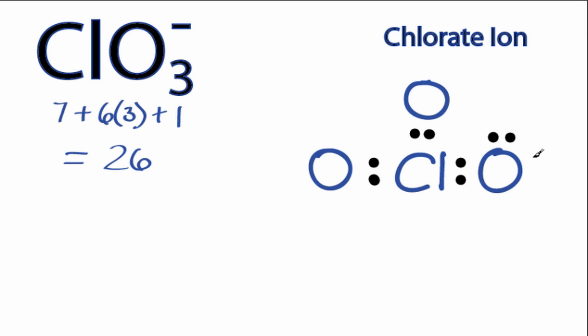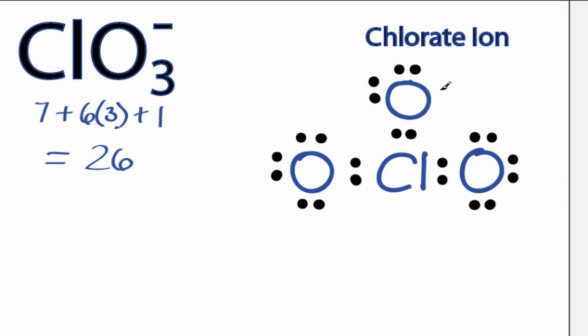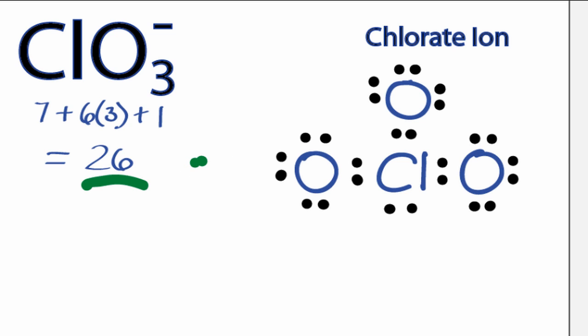8, 10, 24. We have 2 left over, we'll put them here to complete the octet for chlorine. So we've used all 26 valence electrons, and each of the atoms now has an octet.